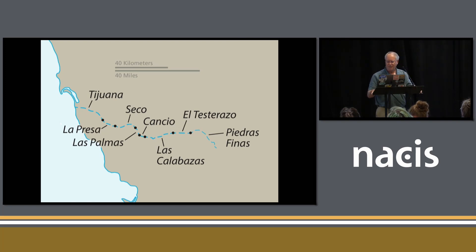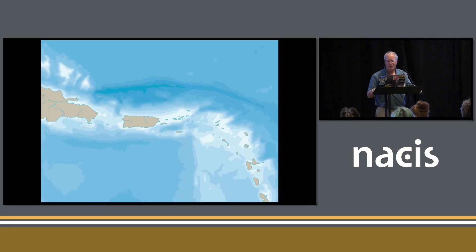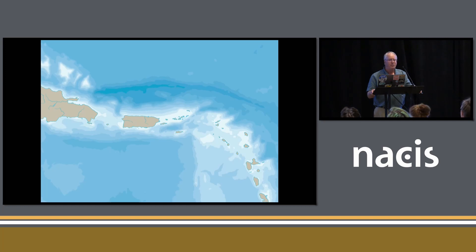Staying on the hydro theme, we have all new bathymetry for Natural Earth. We took great pains to get the generalization just right. The isobaths start at 200 meter depth, which corresponds with the continental shelf, and then it goes down in 1000 meter steps to the very deepest trenches.